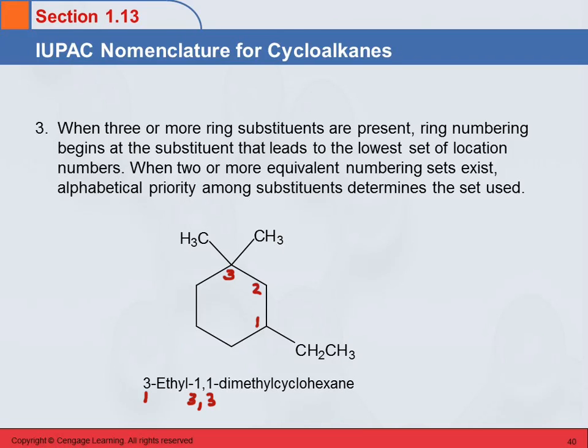Any questions? A student asks: can you start with number one on a carbon that has no substituent? No — one is always going to be on a substituent. It's different from a straight chain, which has an end. This is a circle — there's no inherent beginning. We get to decide, and we always start so that a substituent gets the number one.